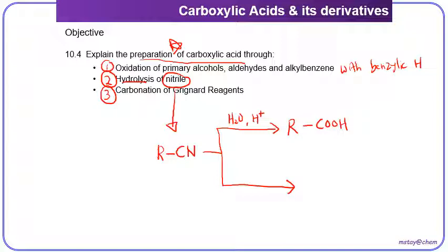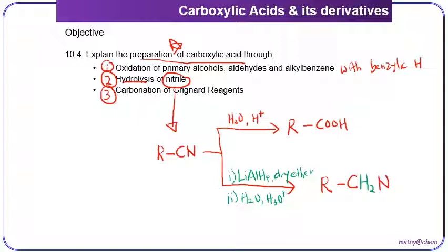Another reaction carried out by nitrile, which is always in our syllabus, is reduction, which uses lithium aluminum hydride in dry ether followed by hydrolysis. In this case, the alkyl group remains the same, the carbon remains, and reduction gains hydrogen. You will notice that we add hydrogen at both carbon and nitrogen. So this is the process of oxidation and this is the process of reduction.